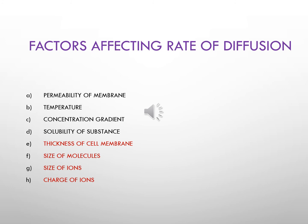Next is solubility of the substance — when solubility increases, the rate of diffusion also increases. So the rate of diffusion is directly proportional to these factors. Next is thickness of the cell membrane — when the membrane becomes thick, diffusion becomes slow, so rate of diffusion is inversely proportional to thickness. Next is size of molecules — when molecular size increases, diffusion rate decreases. Likewise, when the size of ions increases, the diffusion rate decreases.